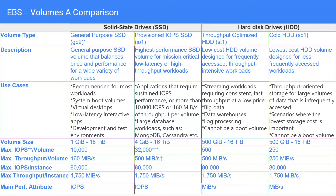Before we move ahead, let's clarify one more thing. When you look at disks and measure their performance, there are two main criteria. One of them is input/output per second — IOPS. This means how many transactions, or read/write operations, you can do per second.